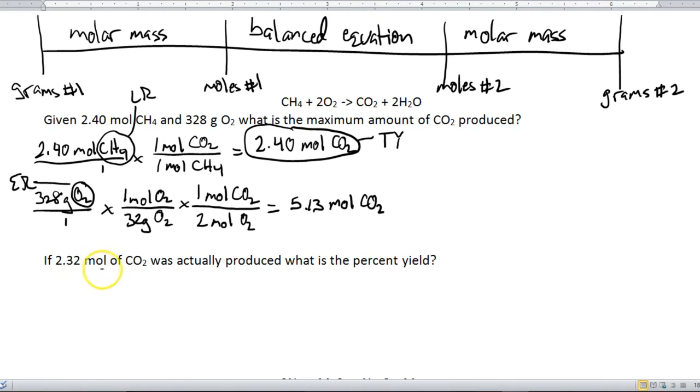Alright, so let's take a look at this. If 2.32 moles of CO2 is actually produced, what is the percent yield? Okay, so the percent yield is kind of like the experiment's grade. Right, it tells you out of a hundred percent how accurate and how precise things happen in that particular experiment. So obviously the larger the value, the better the percent, the lower the value, the worse the experiment actually was.